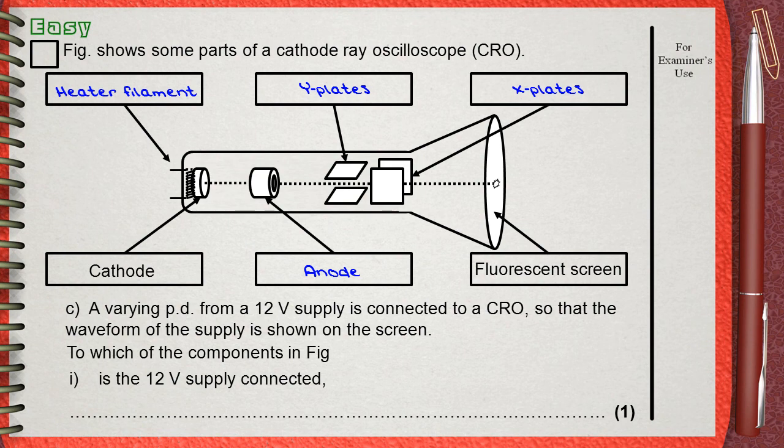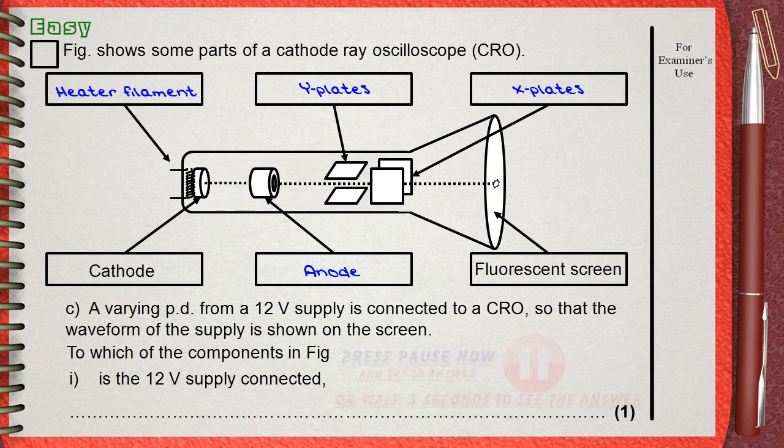Question C. A varying potential difference from a 12V supply is connected to a CRO so that the waveform of the supply is shown on the screen. To which of the components in figure is the 12V supply connected?